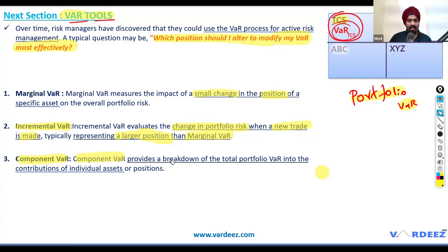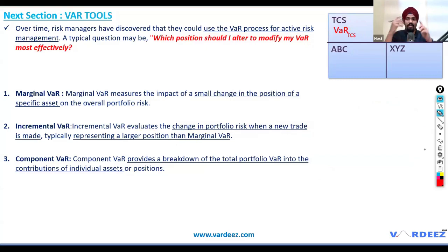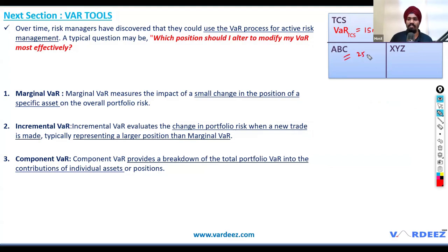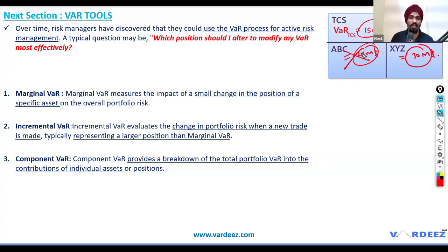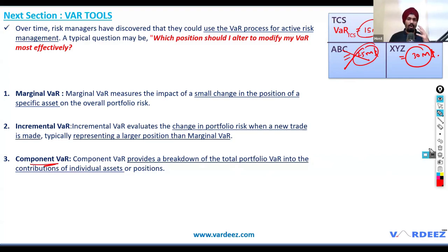Component VAR gives a visual view of risk for each component. If TCS VAR is $15M, IBM $14M, ABC $25M, and XYZ $30M, you can see the VAR contribution of each. Removing the highest-risk component reduces your total VAR. That's the purpose of component VAR — risk decomposition.